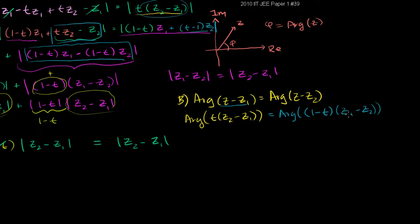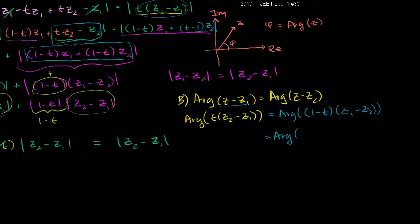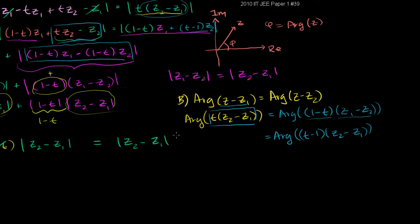We can multiply both factors by negative 1 — multiplying by negative 1 twice doesn't change the number — so we can swap both signs. The claim then becomes: is the argument of t times (z2 minus z1) equal to the argument of (t minus 1) times (z2 minus z1)?